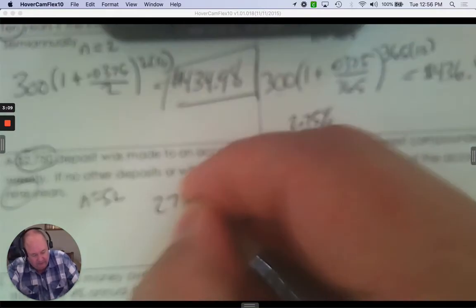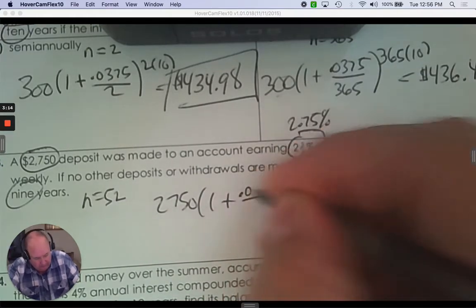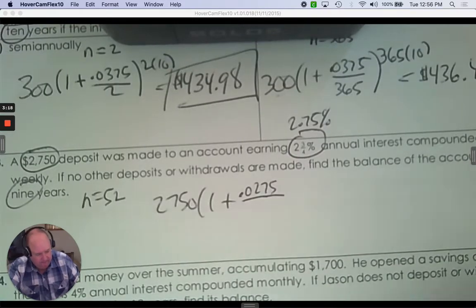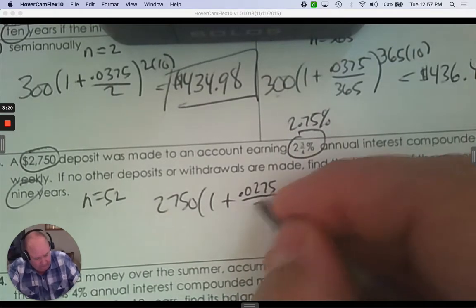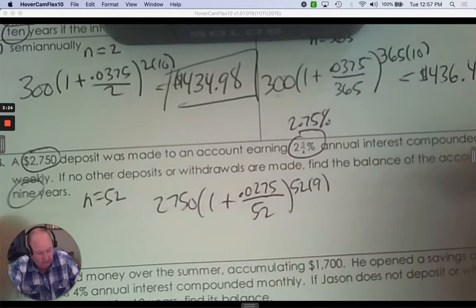2,750. One plus the interest rate. Move the decimal back. .0275. Weekly means 52 weeks a year. And then after nine years. So you have a formula.